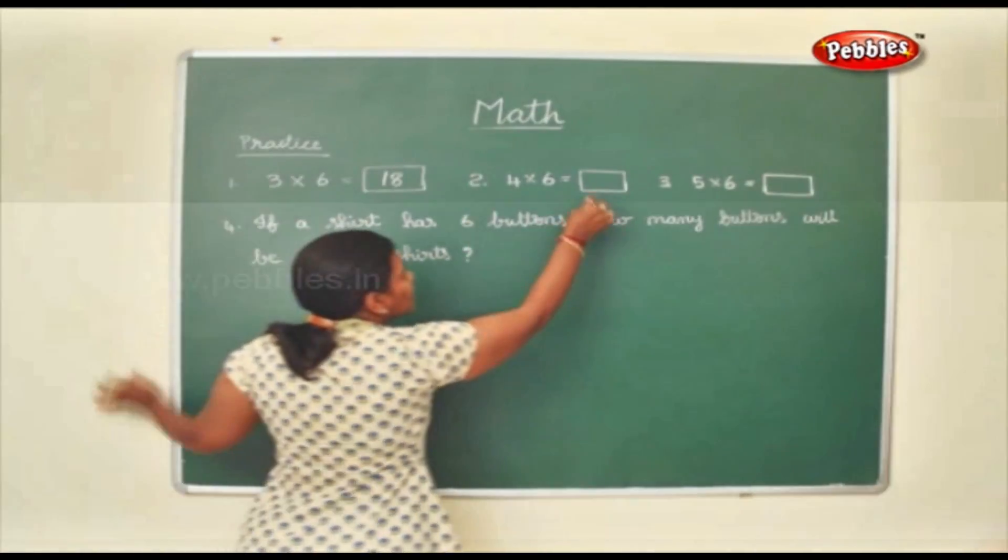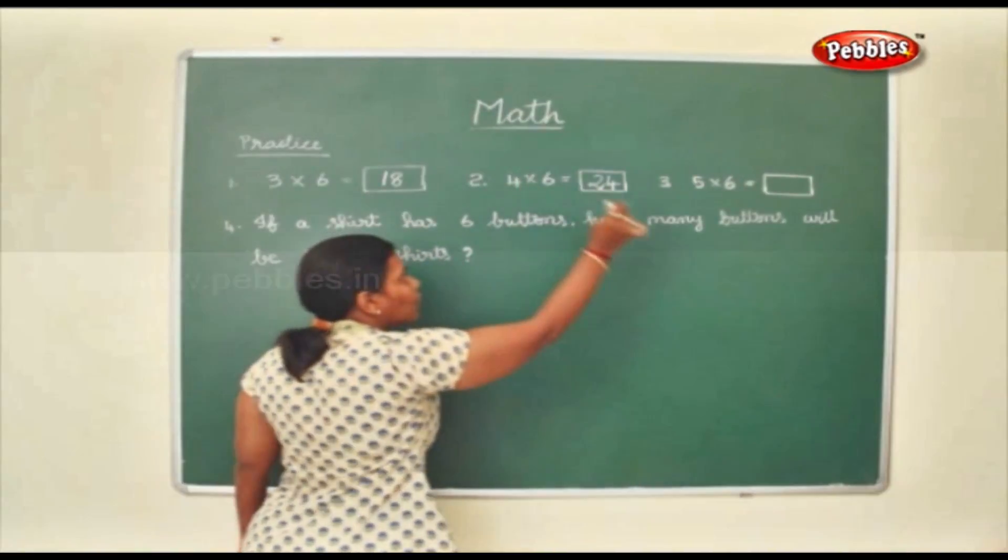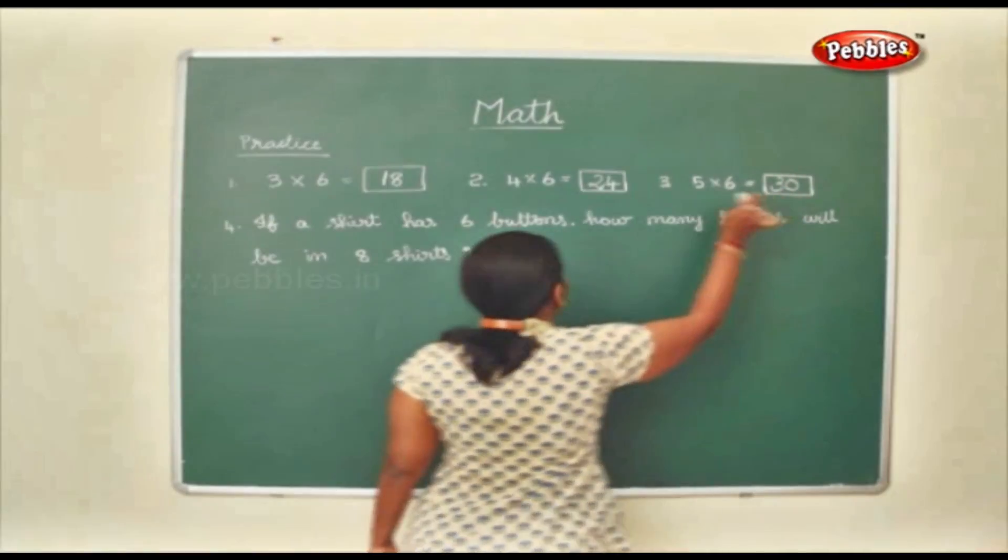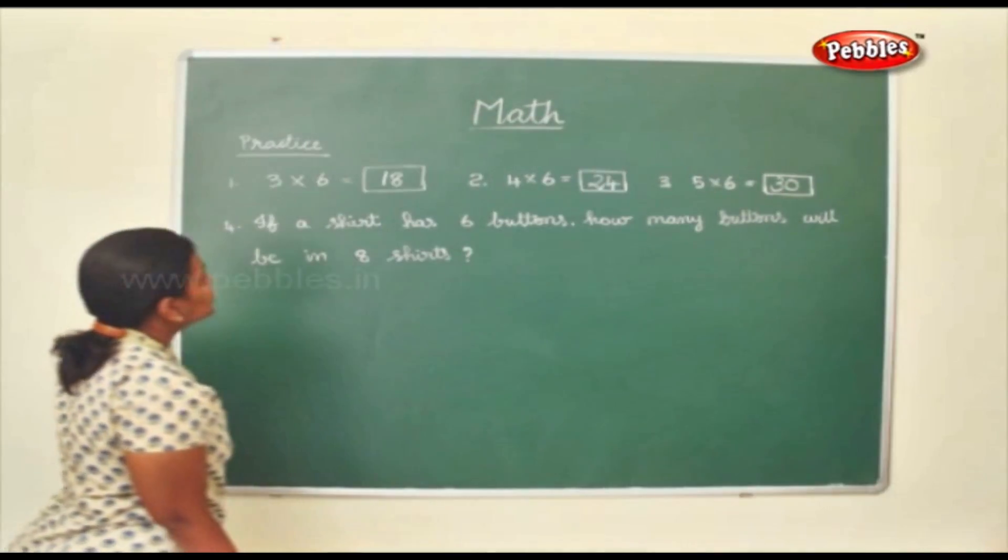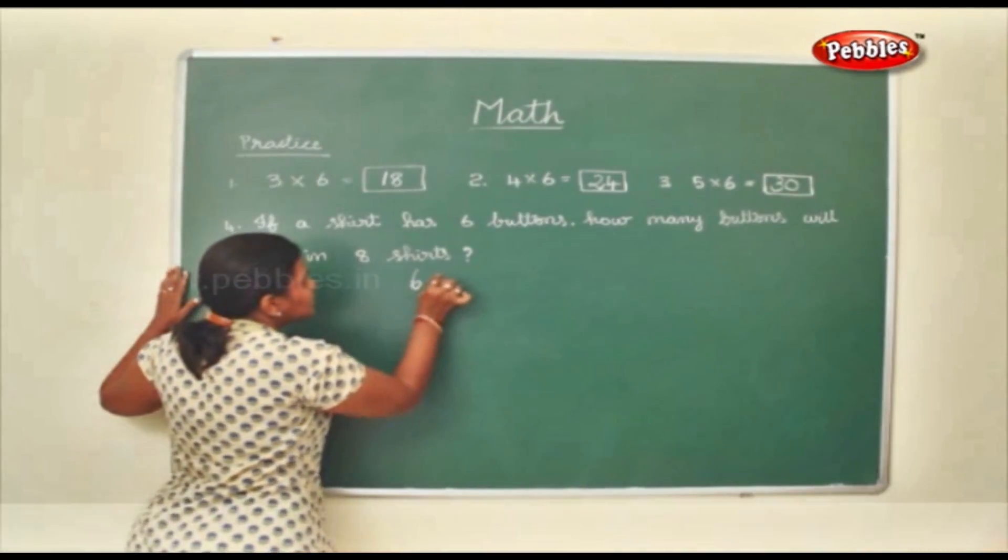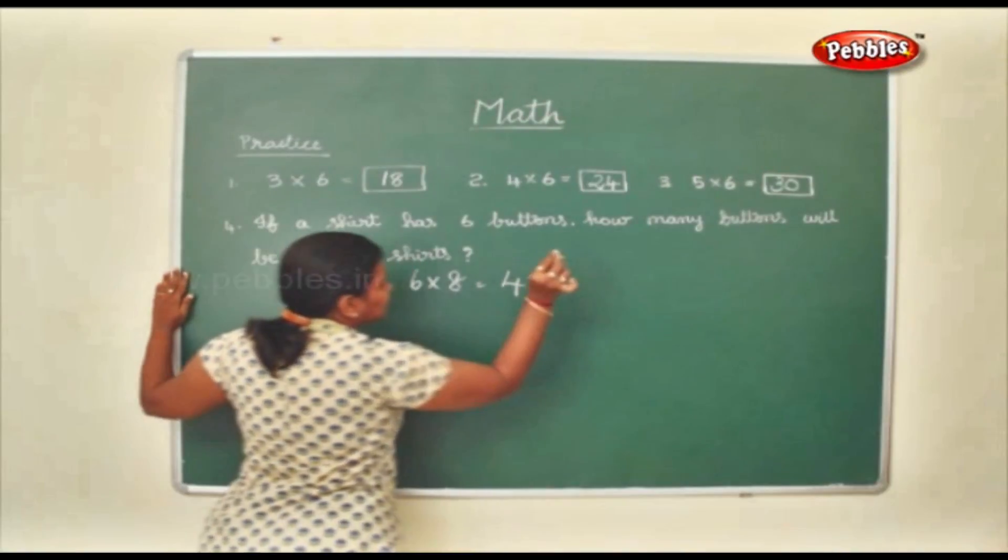So 4, 6 are 24. 6, 4's also will be the same 24. 5, 6 are 30. 6, 5's are also same 30. Now if a shirt has 6 buttons, how many buttons will be in 8 shirts? So it will be 6 into 8 which is equal to 48 buttons.